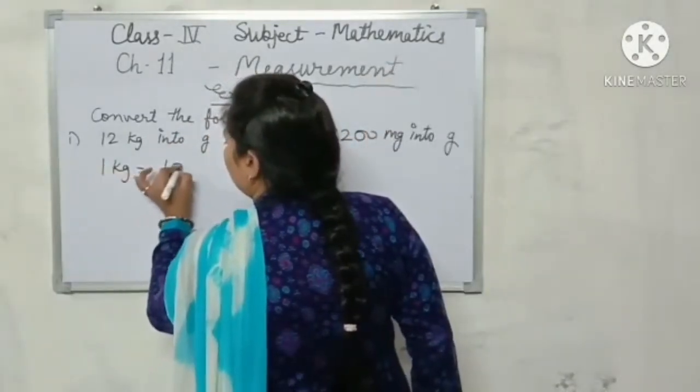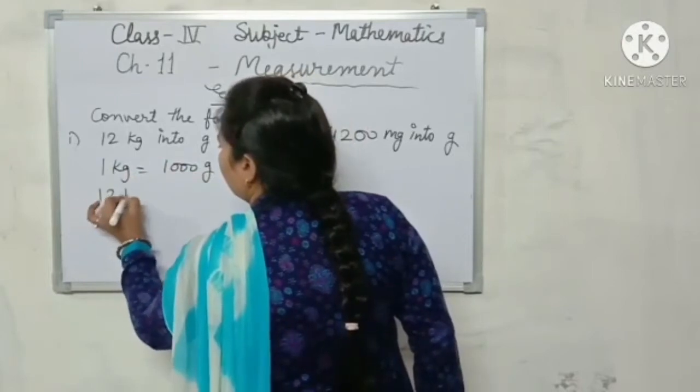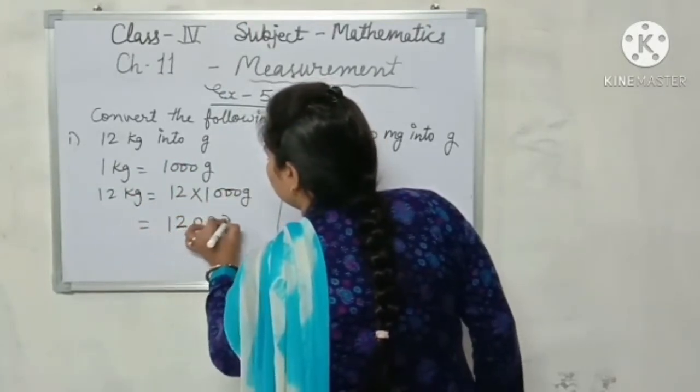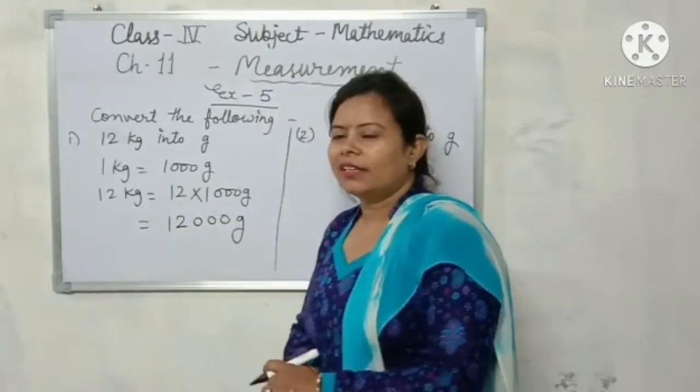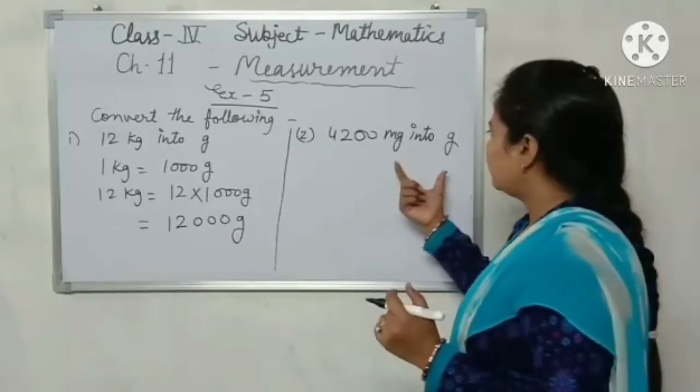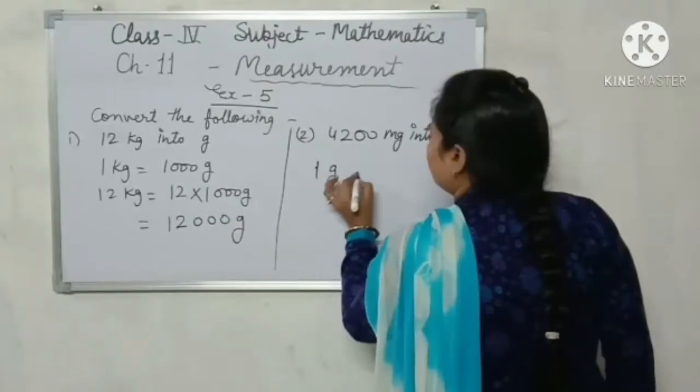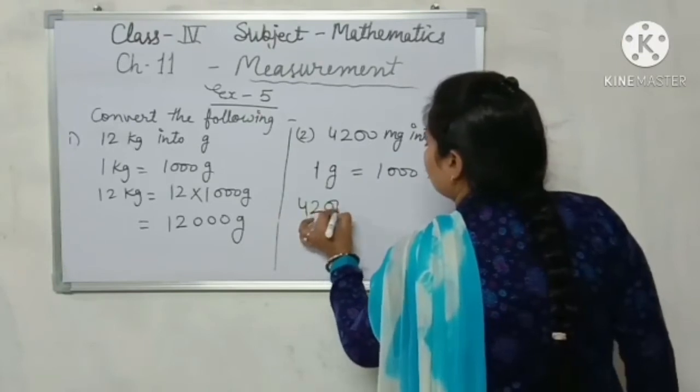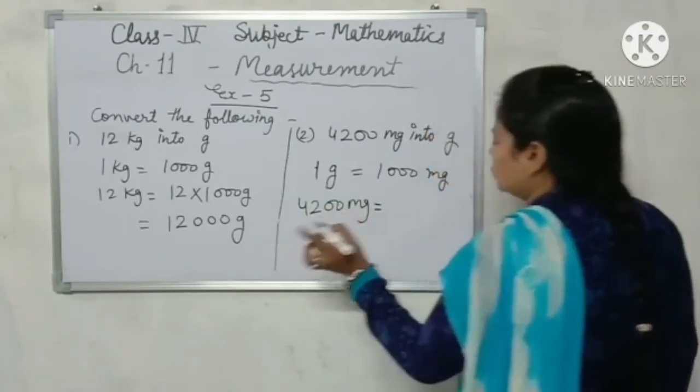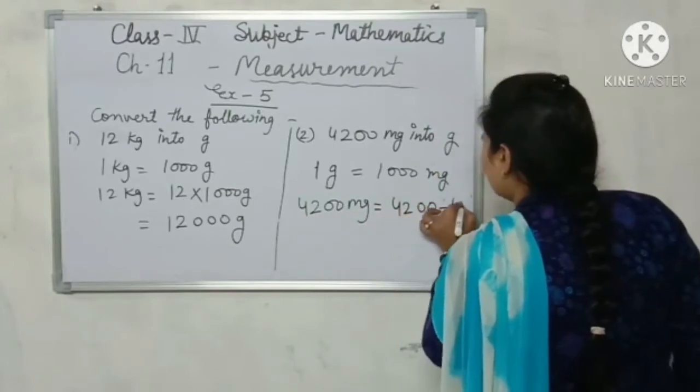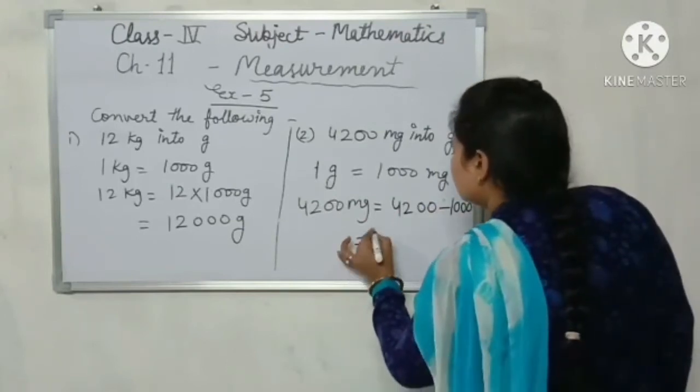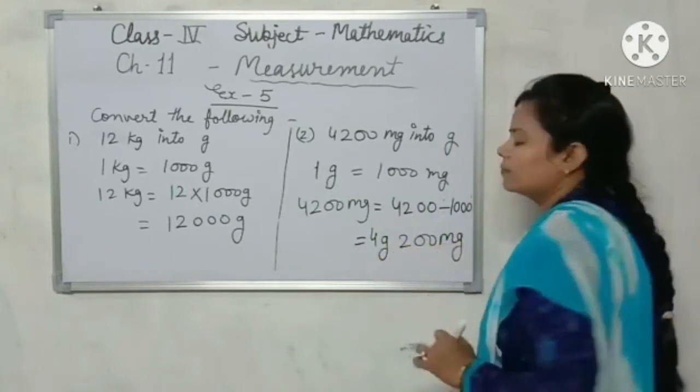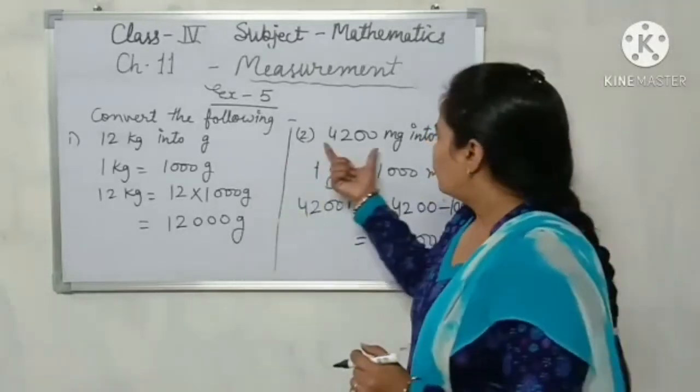We start Exercise 5. Look at here, convert the following: 12 kilograms into grams. 1 kilogram equals 1000 grams, so 12 kilograms equals 12 into 1000 grams. Very good. So the answer is 12,000 grams. Now 4200 milligrams into grams. 1 gram equals 1000 milligrams, so 4200 milligrams equals 4200 divided by 1000. So the answer is 4 grams and 200 milligrams.